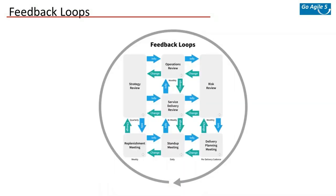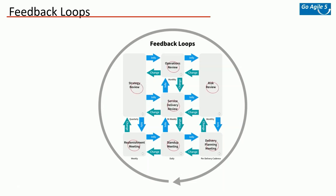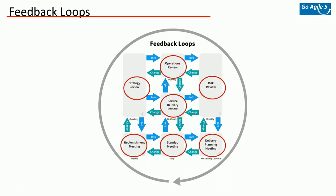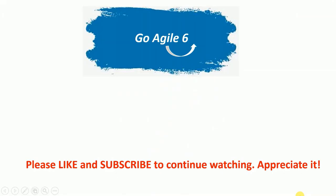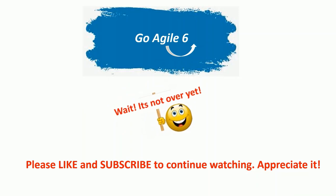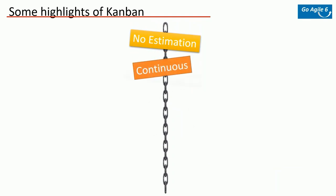The next principle is implementing feedback loops. Feedback loops are a vital part of Kanban — we use them to tell us if the things we do are effective or making an impact. These feedback loops can be done through a set of meetings with different cadences. You focus mainly on how you're getting things done, how you can do it better, and how you're doing the right things. There are seven different meetings that Kanban uses for feedback loops. We don't need to go into all the details right now, but this gives you an idea of how many instances you can get feedback.